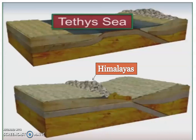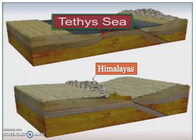Due to this collision, the sedimentary rocks which were accumulated in the geosyncline of the Tethys Sea started rising up, thus leading to the formation of the Himalayas.